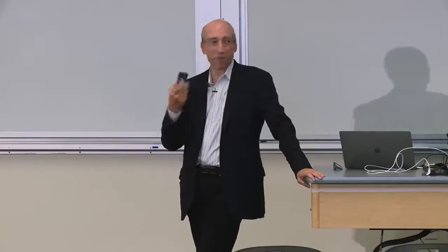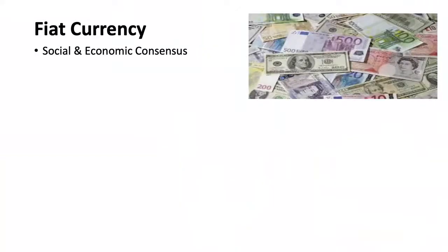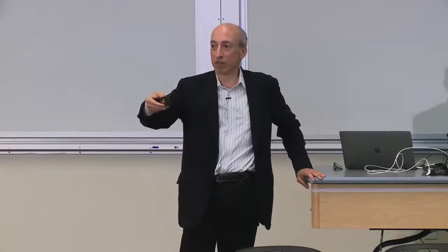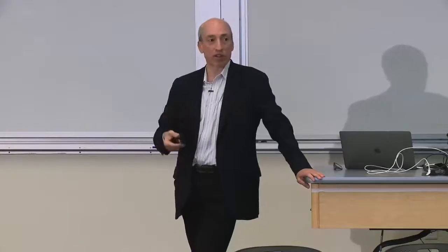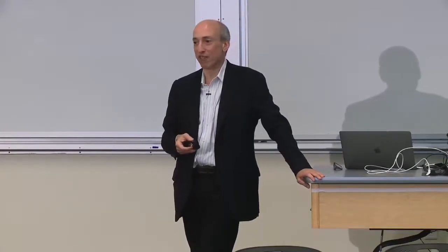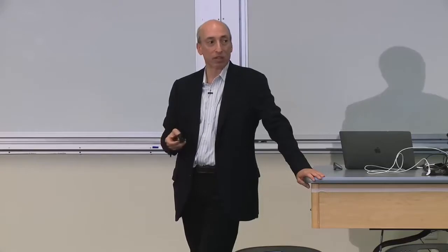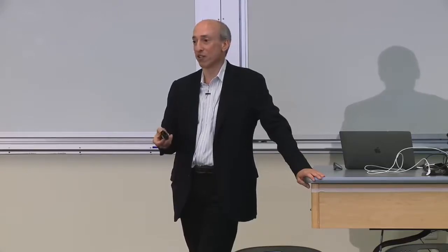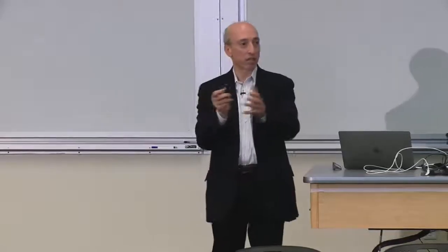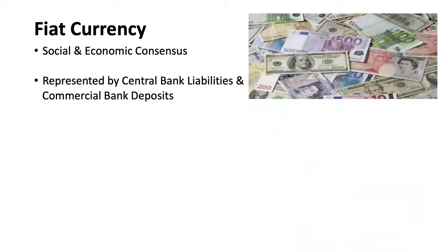What the class already covered about fiat currency: first, social and economic consensus. It's part of the history — not that different from everything that came before, building on that promissory note from China 700 years ago and the private bank notes and goldsmiths of the 1700s. Ultimately governments took control. Fiat currency represents central bank liabilities — it's on the liability side of a central bank's balance sheet.